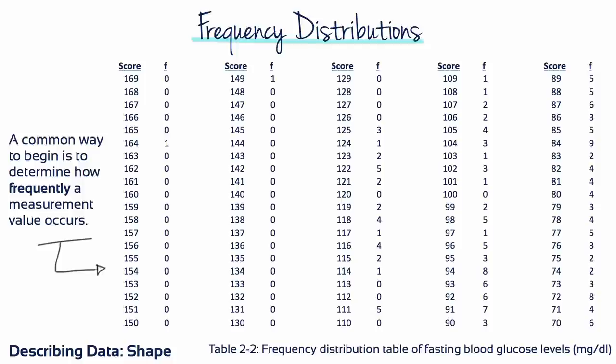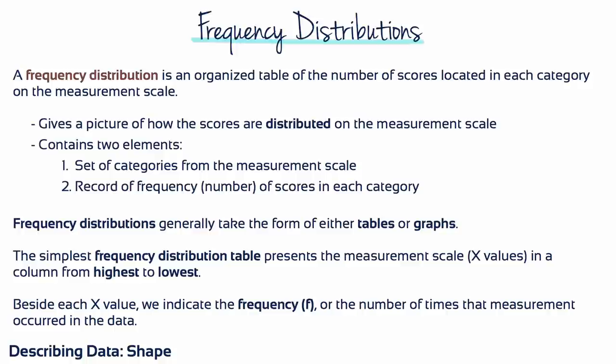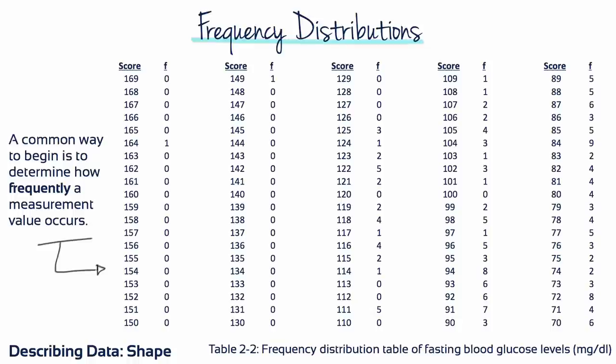Table 2.2 is a frequency distribution representing only part of the data in Table 2.1. A frequency distribution takes a disorganized set of scores and places them in order from highest to lowest, grouping together all the individuals who have the same score. A frequency distribution allows the researcher to see at a glance the entire set of scores.